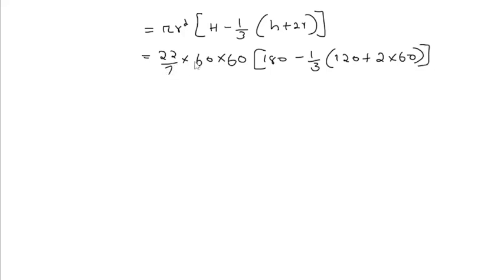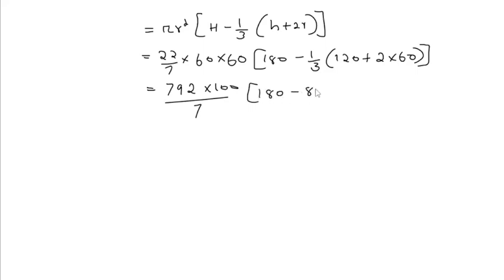Multiplying 22/7 × 60 × 60 gives 79200/7. Here 2 × 60 = 120, and 120 + 120 = 240. Dividing 240 by 3 gives 80, so inside the bracket we get 180 − 80 = 100. Dividing 79200 by 7 gives approximately 113.14, multiplied by 100 gives 11314 cm cubed, which equals 113.14 × 10000 cm cubed.